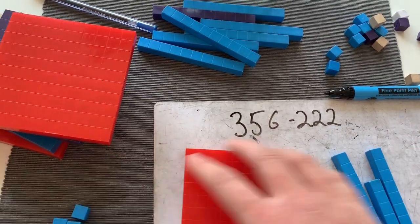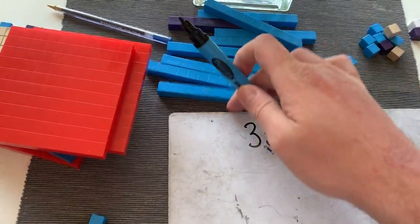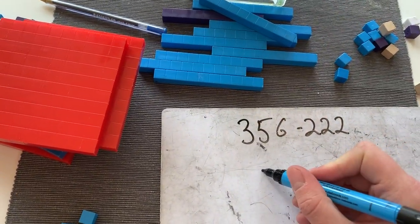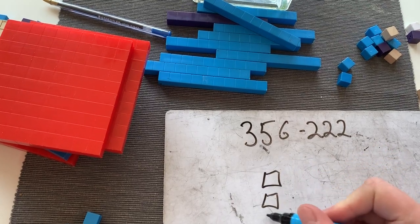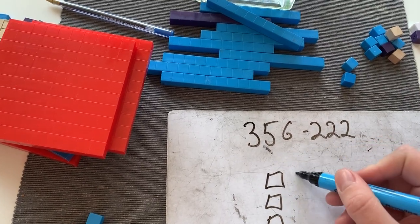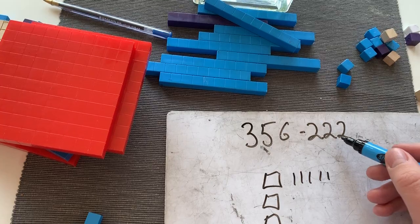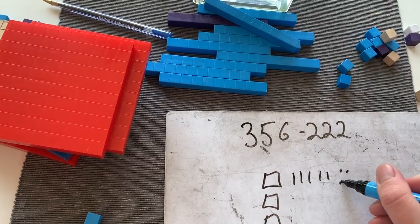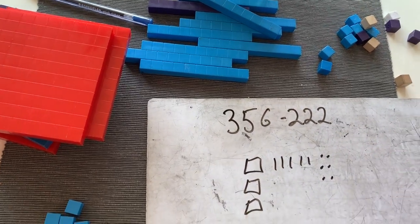If you don't have deans, which I hope you don't, or you're very strange children, what you can do is just draw out a picture of it just to help you. So 300, 5 tens: 1, 2, 3, 4, 5, and 6 ones: 1, 2, 3, 4, 5, 6. Beautiful drawing there.